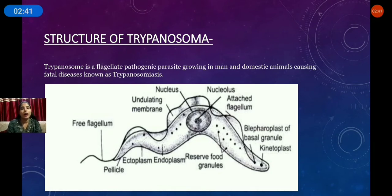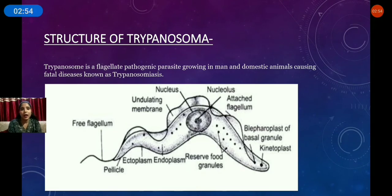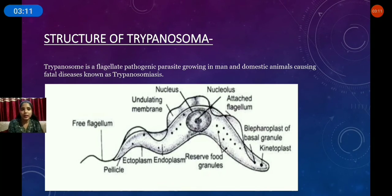These are the food storage granules. There is a large single nucleus in the center. You will see the nucleus with chromosomes, and the attached flagellum arises from the anterior end while the posterior end is elongated.